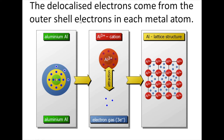The delocalized electrons come from the outer shell of an atom. For example, aluminium has three outer electrons, so every aluminium atom contributes three delocalized electrons. A different metal would have a different number of electrons moving around the structure.